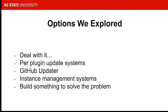Some of the options we explored: the first was just deal with it — write down a process and hope it works. We didn't do that for very long. We tried per-plugin update systems where a snippet of code would say the source code is on GitHub and here's how to check for new versions. Our GitHub Enterprise instance runs in private mode, so the only way to access it is through authentication tokens, which we had to manage or write a separate service to handle. Keeping up with that as a dependency was really annoying.